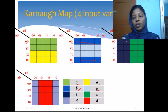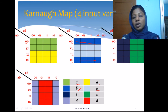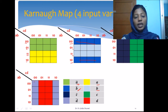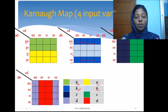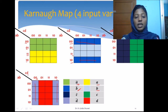This navy blue block has all AB values varying, so we consider only the columns. In the column, only C is constant and it takes the value 0, so this navy blue block is C-bar. This green block will be C because C is getting the value 1 and everything else is changing. Similarly, we can fold this map vertically and group all 8 cells together. AB is completely varying and what remains constant is D. Since D is taking the value 0 it corresponds to D-bar, and the red block is D.